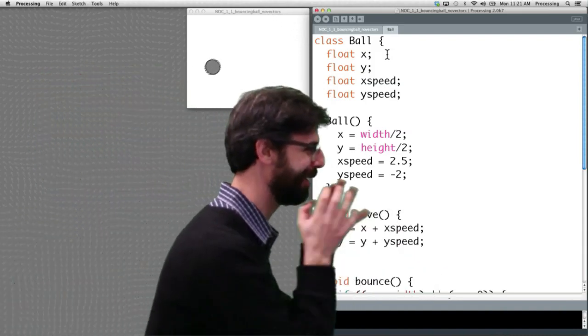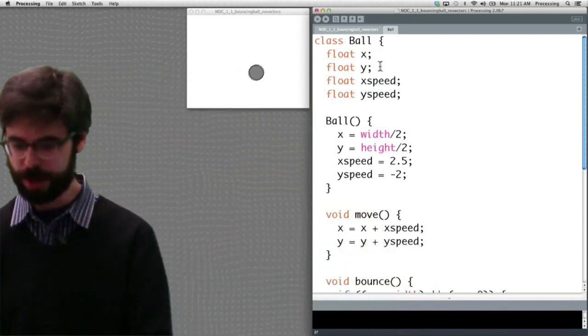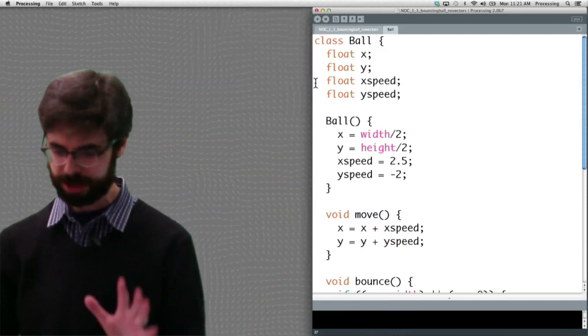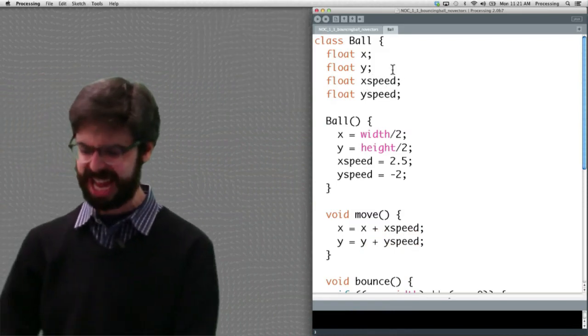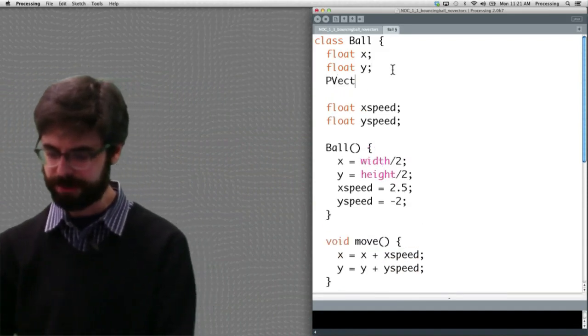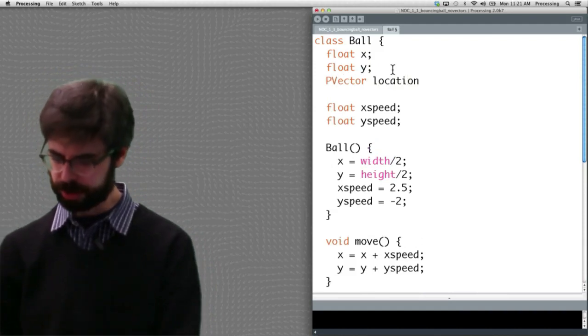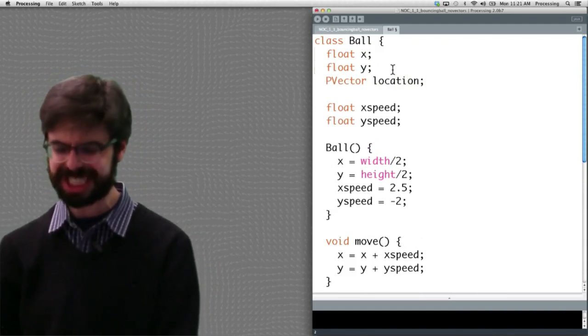Now look, we have an x and a y and an xSpeed and a ySpeed. This is where we need to rewrite our code using vectors. OK. So let's close this here. It's distracting. Instead of an x and y, I want to say PVector location. So I'm just going to write that in there. And I'm actually just going to delete those.